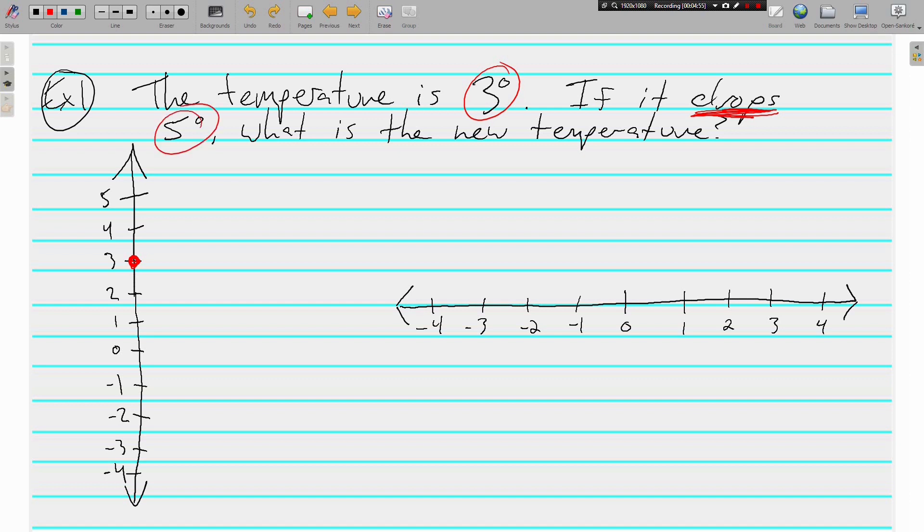And how far down will we go? We're going to go down five degrees. We're not going down to five degrees. We are moving down five degrees. One, two, three, four, five. Right there. So, what is the new temperature? The new temp is negative two degrees. And again, showing my work. What was the problem that I did to get there? Well, I started at three and then dropped as a negative word. So, I subtracted five to get that negative two. 3 - 5 = -2.